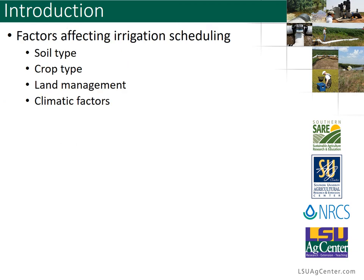When we talk about irrigation scheduling, there are a number of things that go into that. The major things we will need to discuss include the soil type, the crop type that you're going to be irrigating, your land management practices, as well as the climatic factors of how to adjust for the weather conditions to apply irrigation.